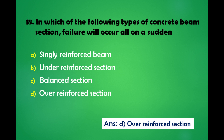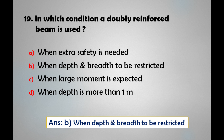The answer is: failure will occur all of a sudden in over reinforced section. In which condition is a doubly reinforced beam used? A) When extra safety is needed, B) When depth and breadth to be restricted, C) When large moment is expected, D) When depth is more than one meter. The answer is: a doubly reinforced beam is used when depth and breadth are to be restricted.